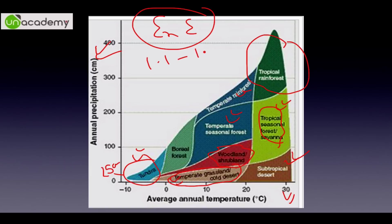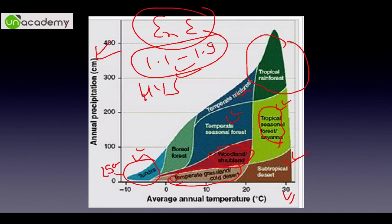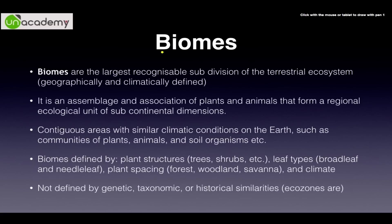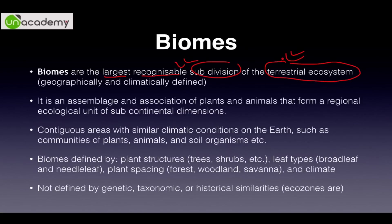You can watch the entire environment and ecology series from part 1.1 to 1.9 before moving forward — just type 'high yield series' and you will get the answer. Biomes are the largest recognizable subdivision of terrestrial ecosystems. They are geographically and climatically defined, and can also be defined as an assemblage and association of plants and animals, forming a regional ecological unit of subcontinental dimensions.